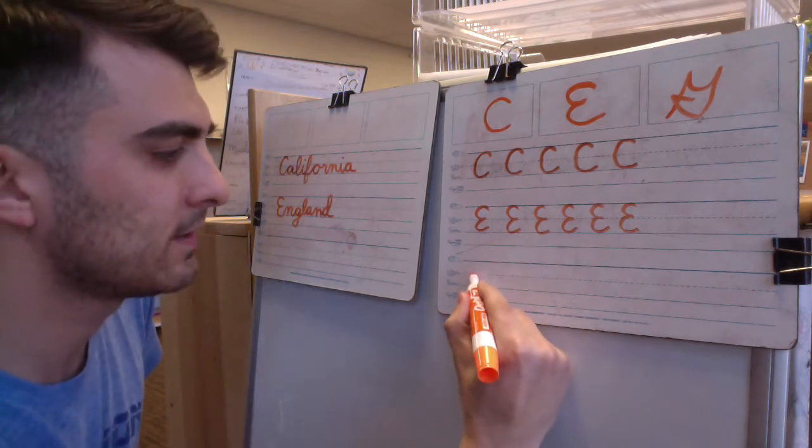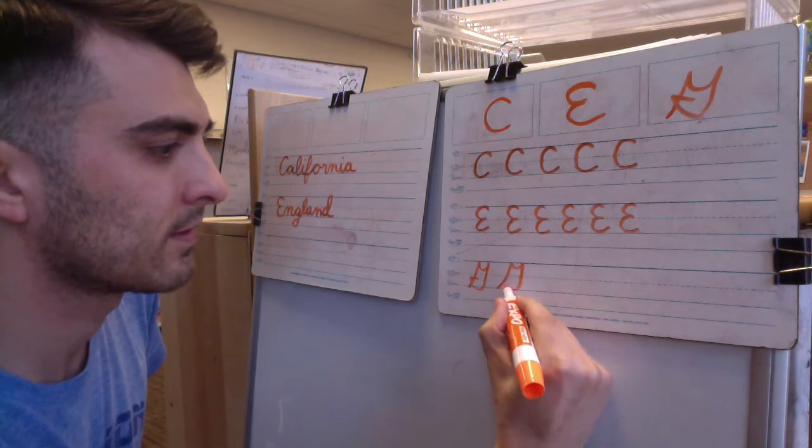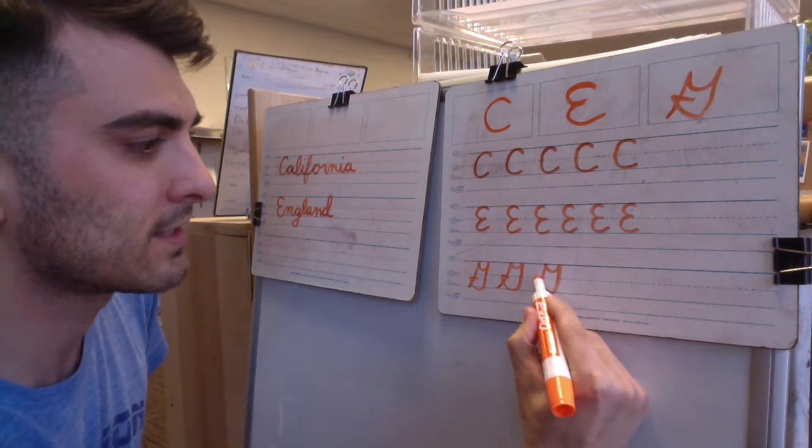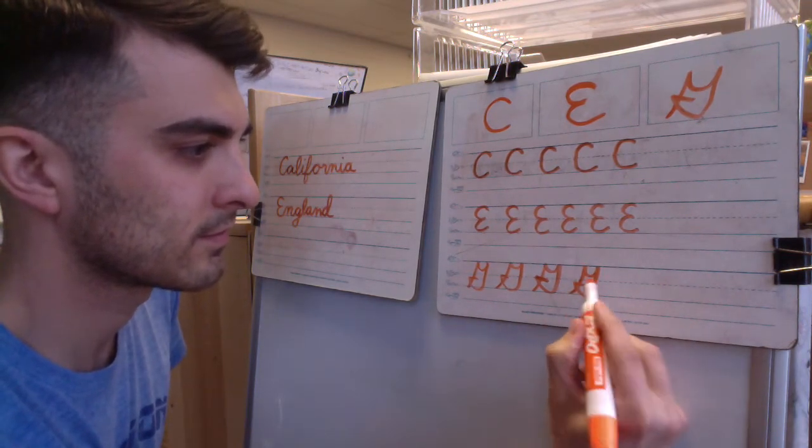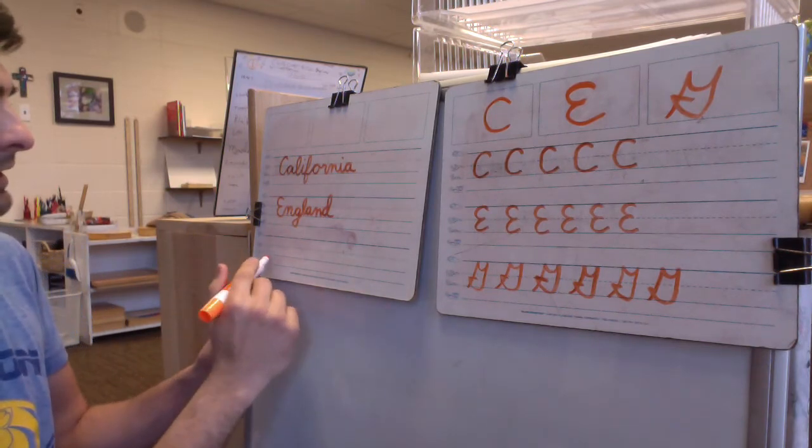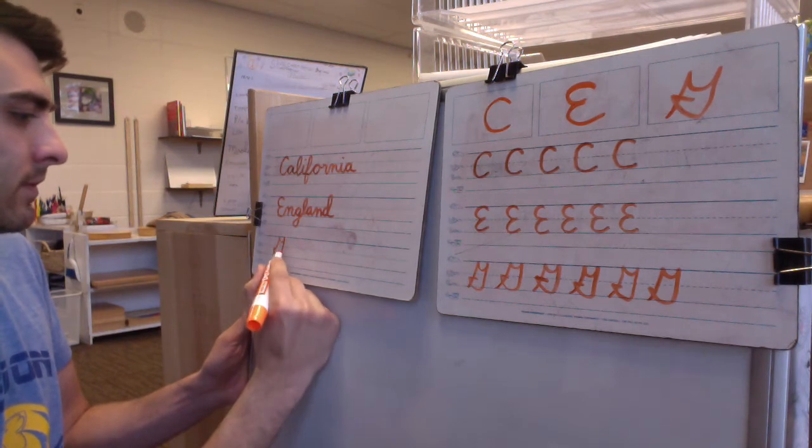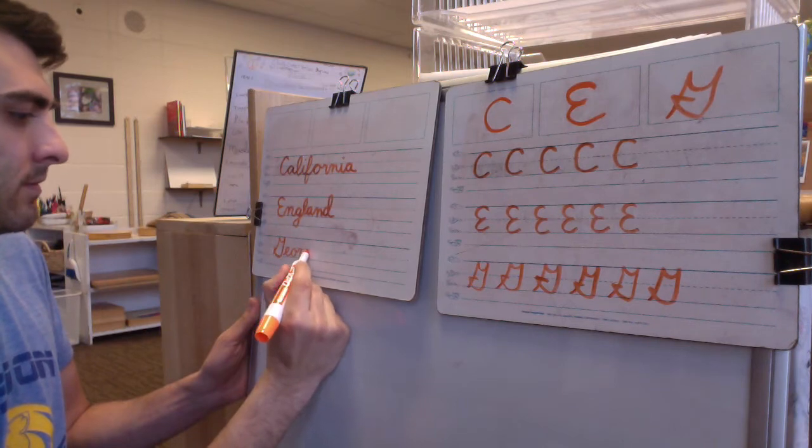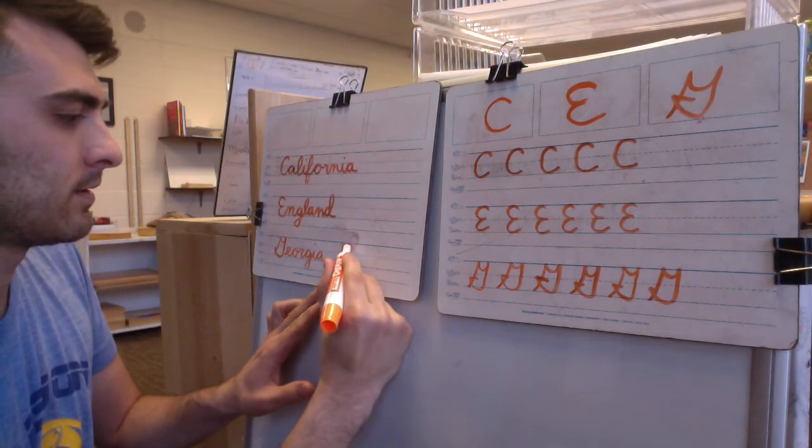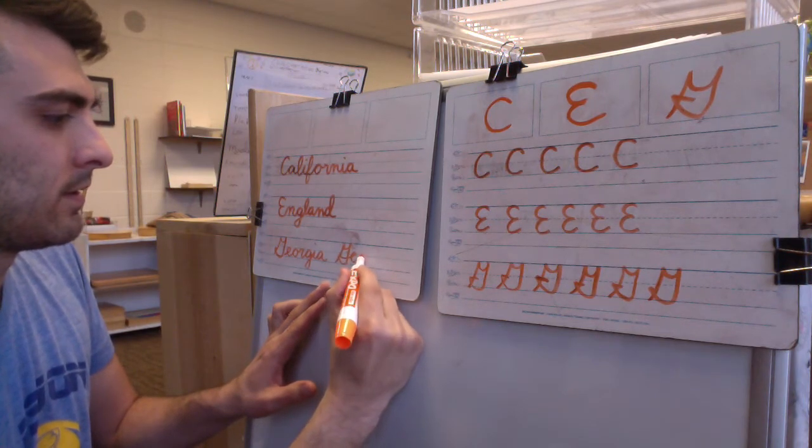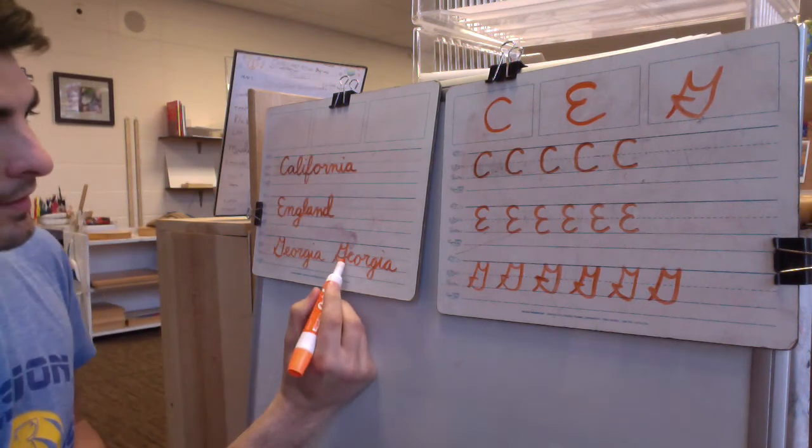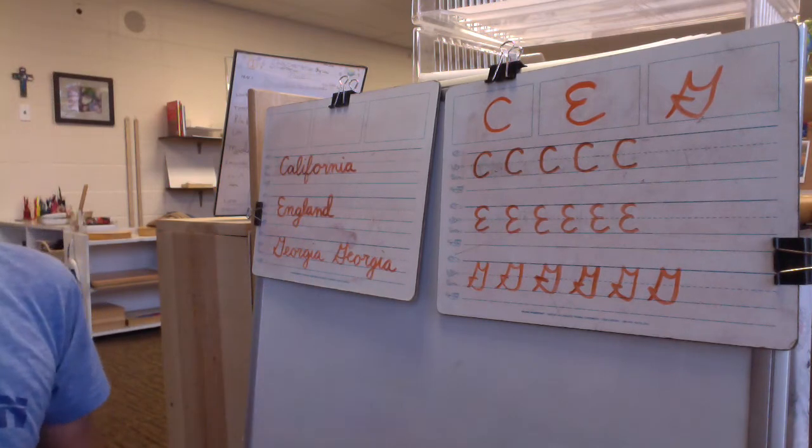All right, now this uppercase G. Now I get up to that skyline, come back down, back up to that skyline, down to the grass line and across. Now if I were to write Georgia, I could do it where they do not connect, or I could go all the way through. You will see it both ways, but the connection is the more correct version.